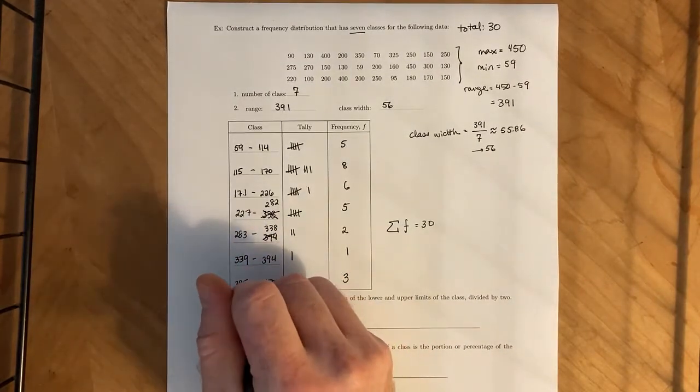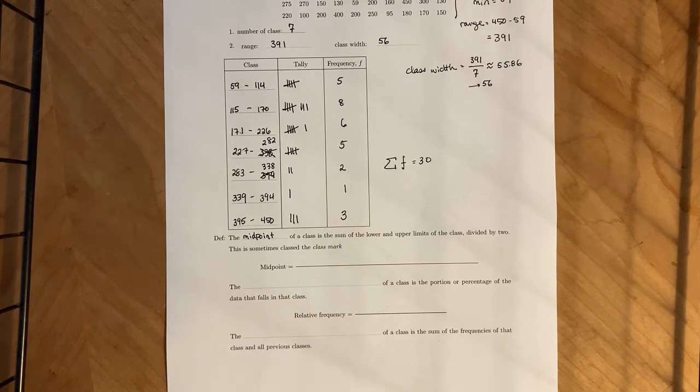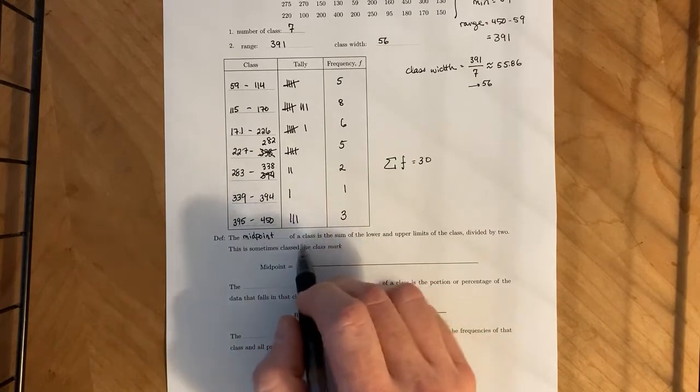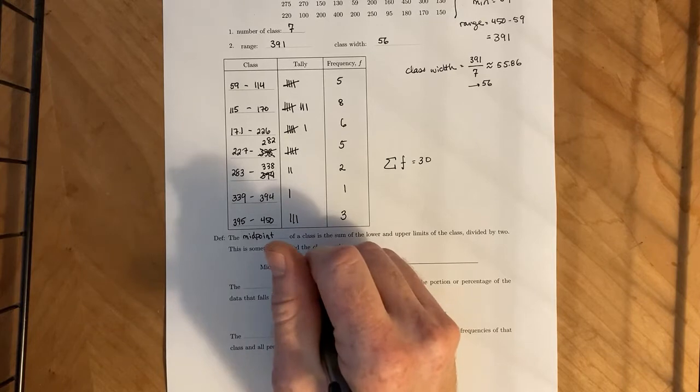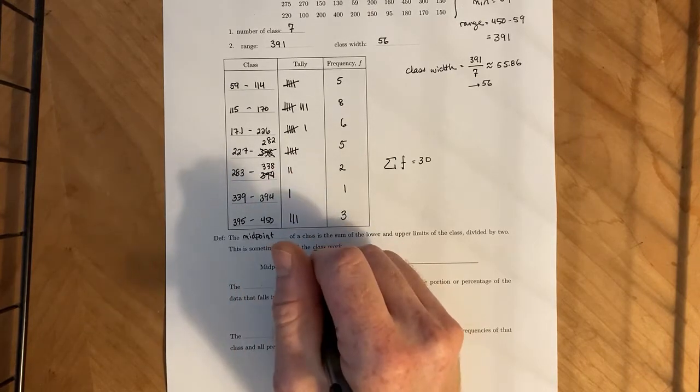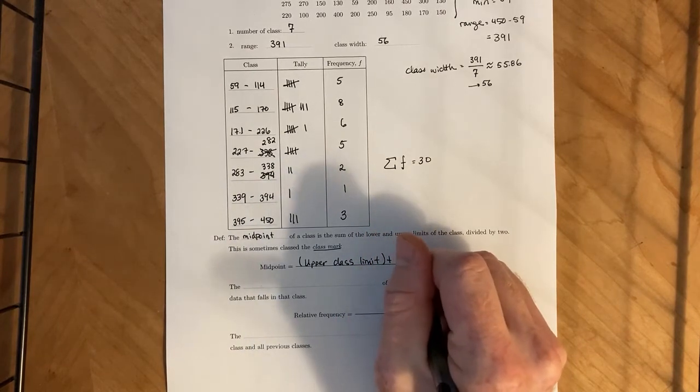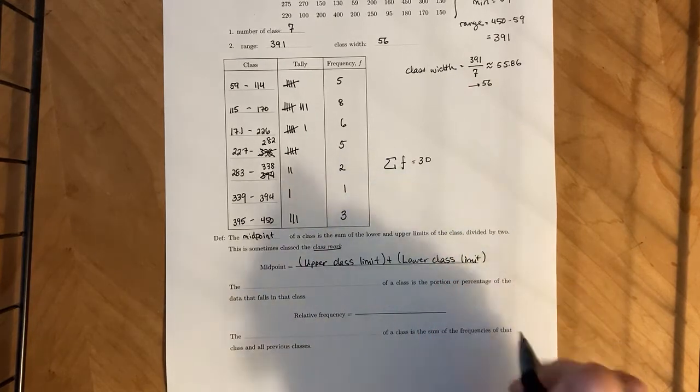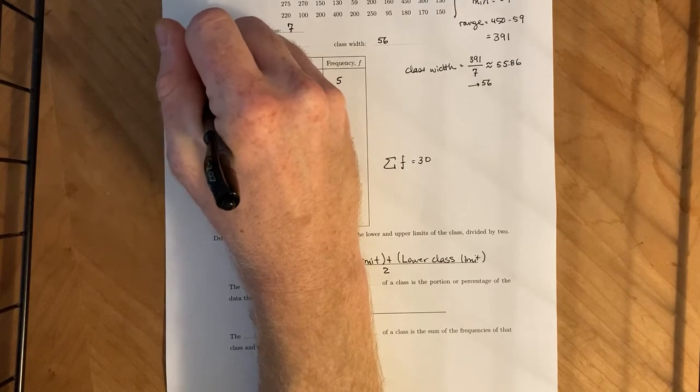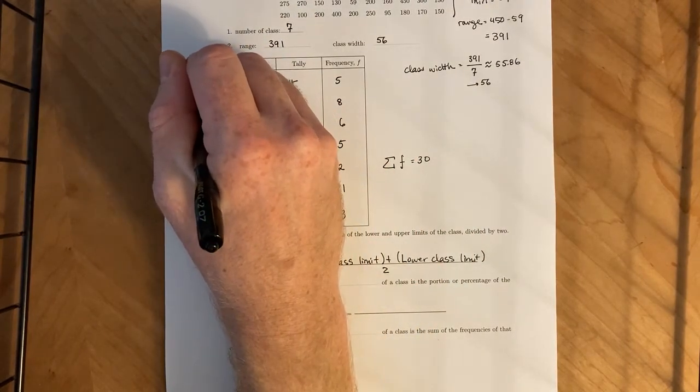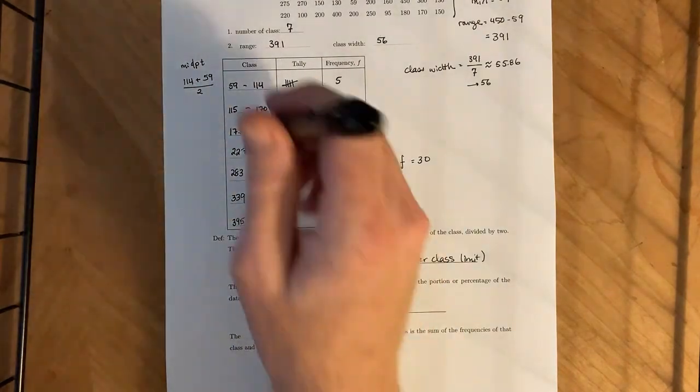Next, we can talk about the midpoint. Just like in geometry, the midpoint is essentially the average of the two numbers or the two coordinates. So the midpoint of the class is the sum of the lower and upper limits of the class divided by two. This is sometimes called the class mark. So if we go ahead and write down the formula in words, midpoint is the upper class limit plus the lower class limit divided by two. So for example, if we come over here, the midpoint for this one is going to be 114 plus 59 divided by two, which whatever number that gives you, that's going to be smack dab right in the middle of that class.